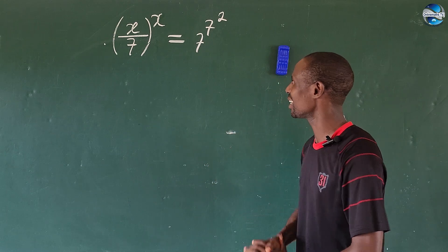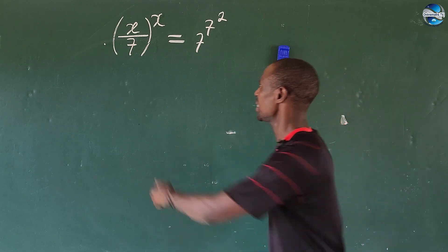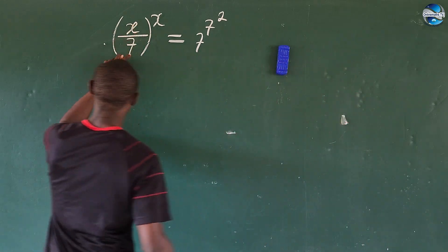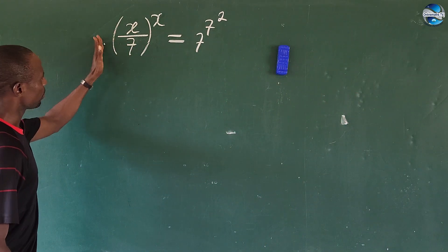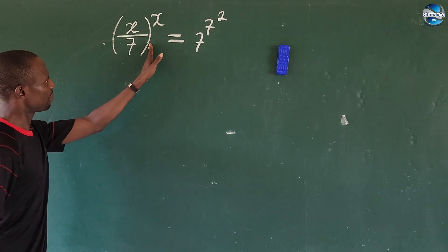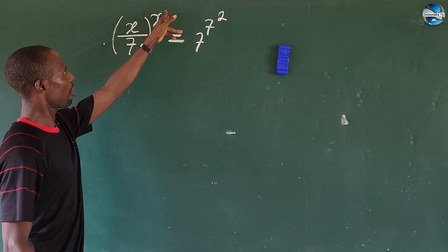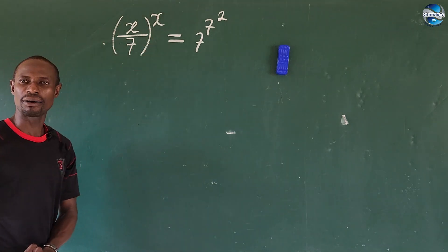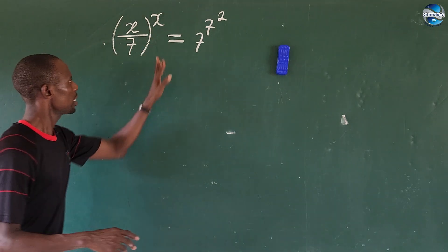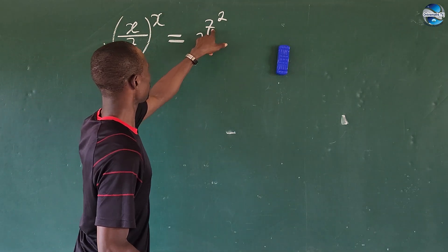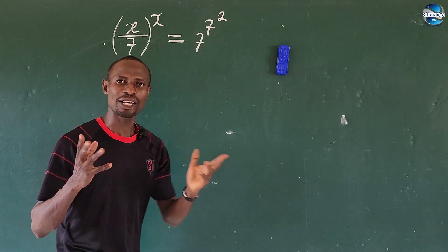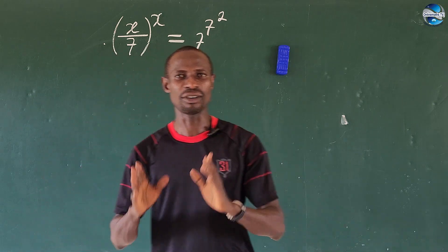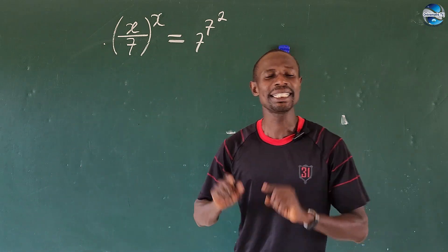So how do we solve this math challenge here? The question is x all over 7, open bracket, raised to the power of x, equal to 7 to the power of 7, r to the power of 2. How do we solve for the value of x here?